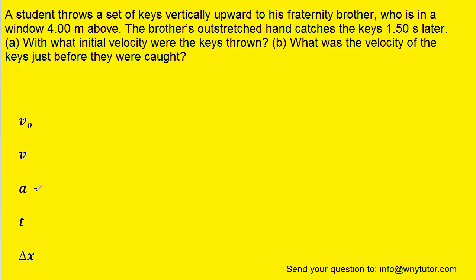And so the acceleration of the keys is considered to be negative 9.8 meters per second squared because of the influence of gravity. Keep in mind that when something is thrown straight up in the air, it is classified as free fall motion. In that way, we know the acceleration is negative 9.8.